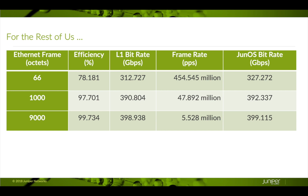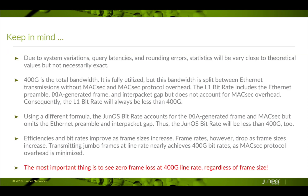Conversely, frame rate drops as the packets get larger — a bigger packet takes longer to transmit. Due to factors like clock speeds, latencies when fetching statistics, and rounding errors, observed values may not perfectly match expected values, but they will be close. In all cases, we utilize the entire 400G bandwidth. However, because we do not include all headers when calculating bit rates, neither the L1 bit rate nor the JunOS bit rate will ever reach 400G.